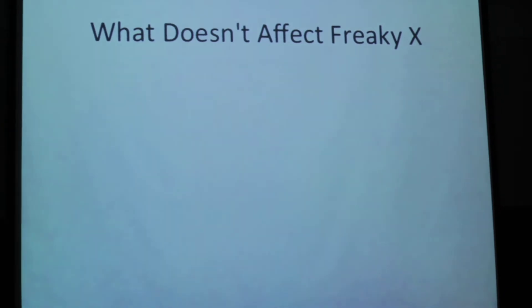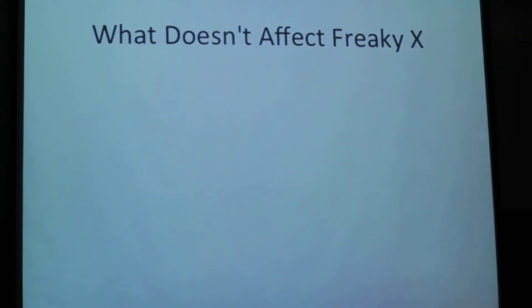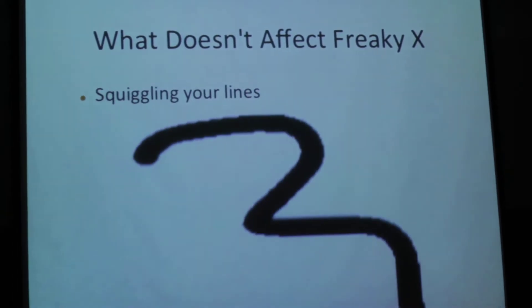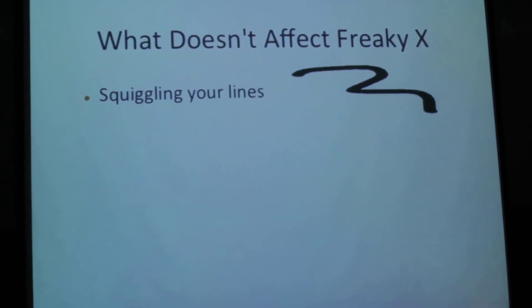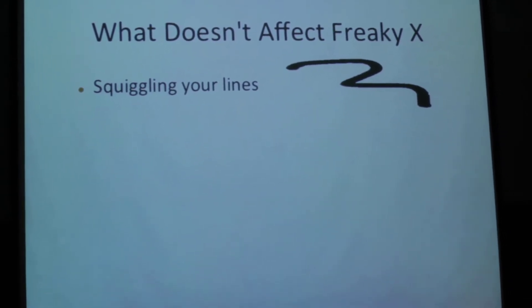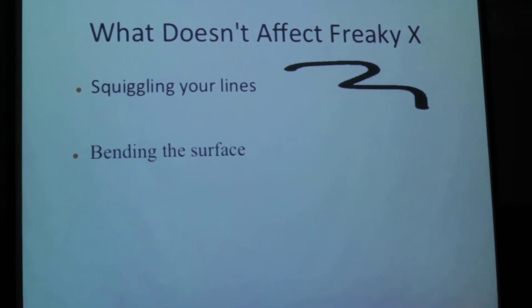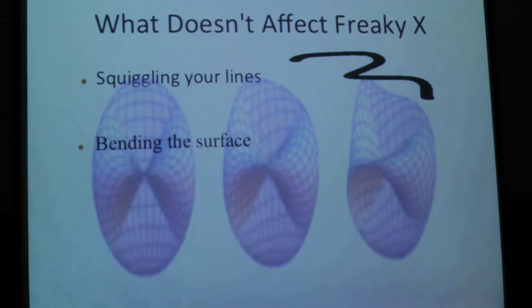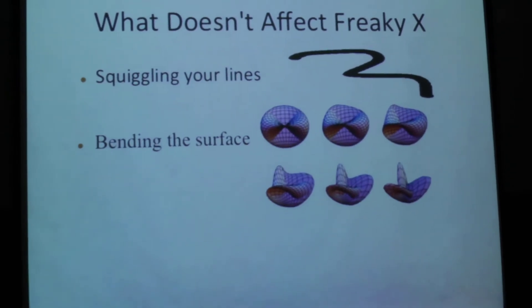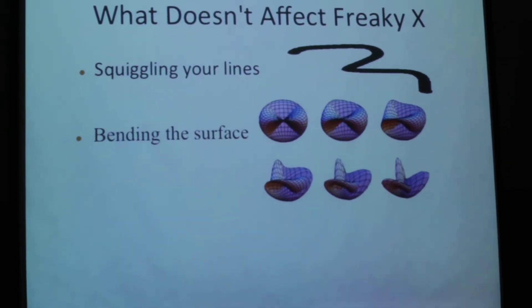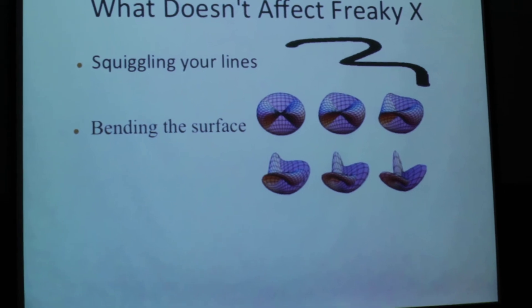And you can immediately realize that there are certain things that you can do that don't affect Freaky X. For instance, you can have as much squiggling as you want. That's not going to change the number of edges, vertices, or faces. It will only change their shapes, so Freaky X will remain the same. Likewise, if the local miscreant decides to bend the surface by running it over with his tricycle, Freaky X won't change because your graph will remain intact.